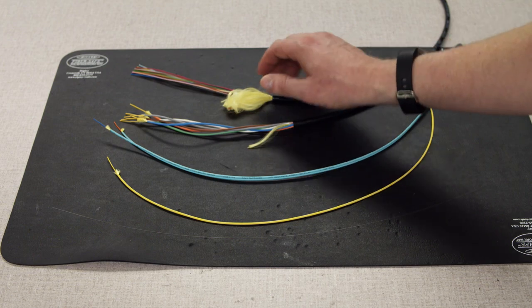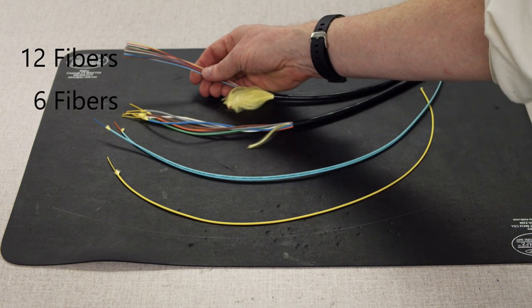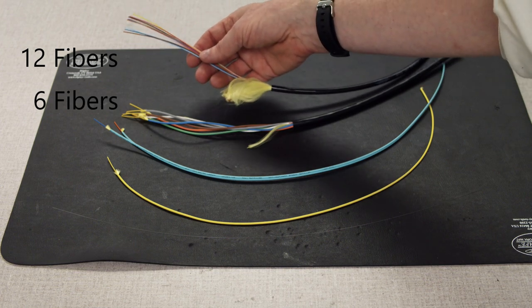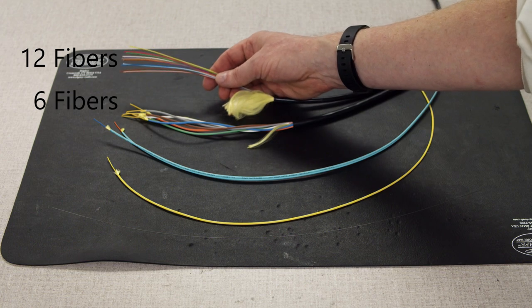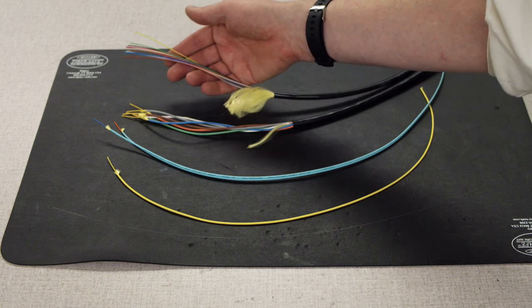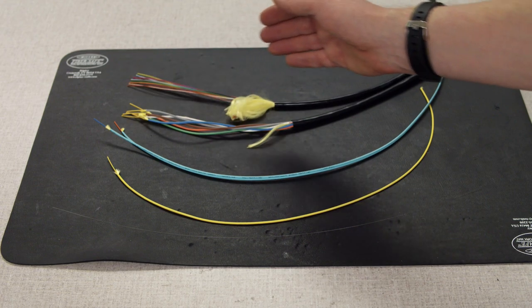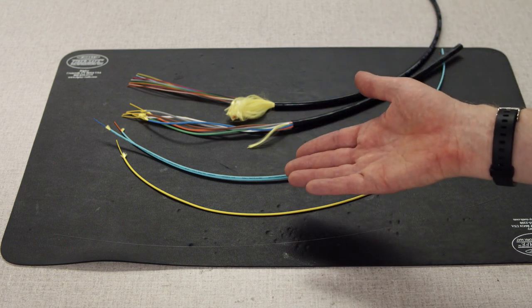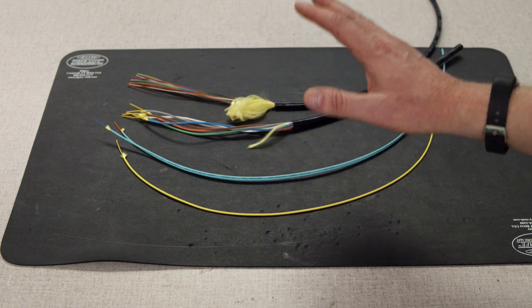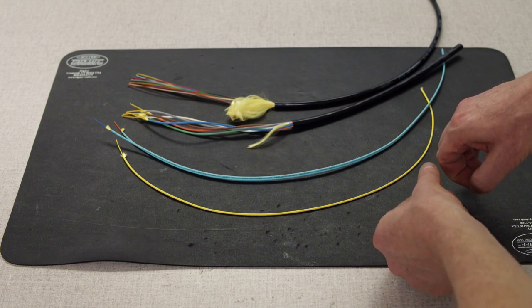These cables have less jacketing and protection around the individual fibers which reduces costs and weight but also means that more care has to be taken when handling the individual fibers during installation. But no matter the style of fiber optic cable, all of these contain one or more strands of glass fiber exactly like this one.